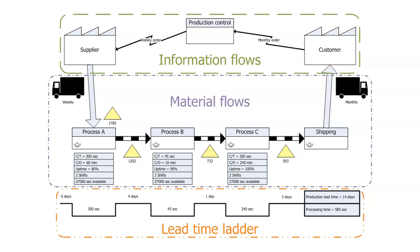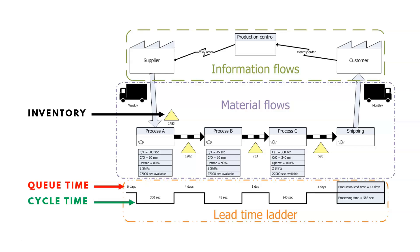That little yellow triangle in the middle and throughout the flow represents inventory — the number of units in queue between processes. On the lead time ladder at the bottom, the top lines are queue times and waitings: six days of waiting, then four days, then a day, and so on — those are non-value-added activities. On the lower rung of the ladder, you're going to see cycle time, the actual processing time — the time spent doing things. That's value-added time. We want to minimize that non-value-added queue time and focus on value-added cycle time activities.